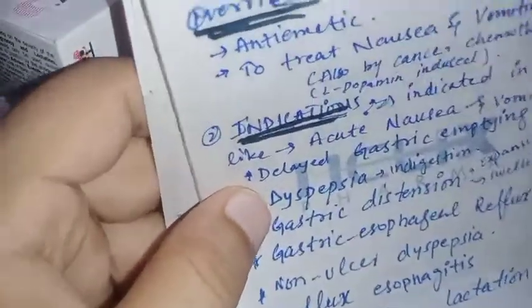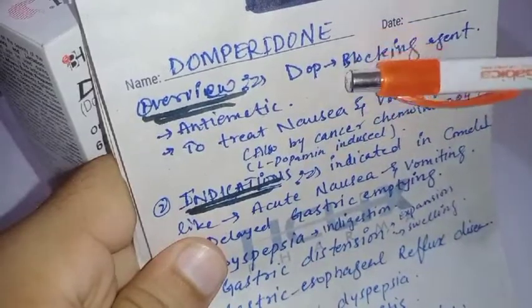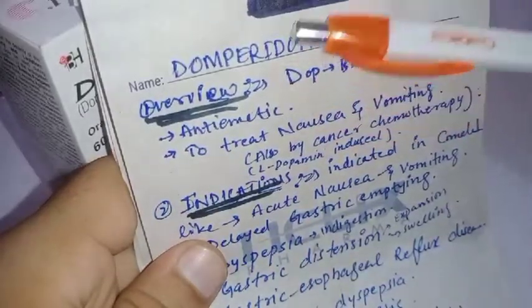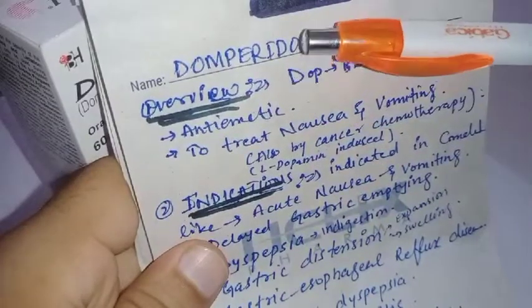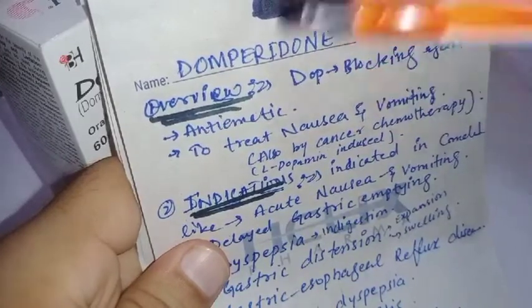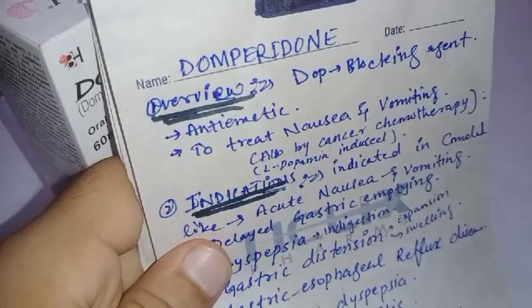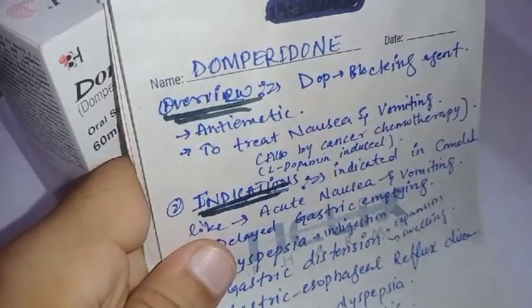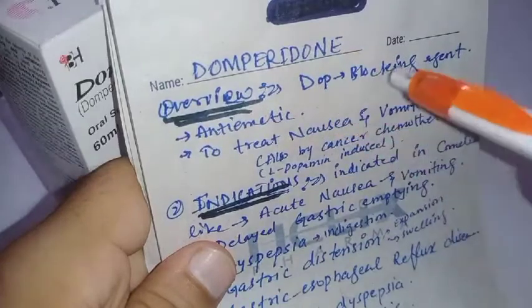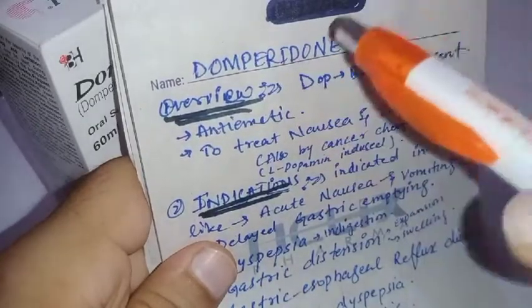Let's talk about its overview. Domperidone is a dopamine blocking agent. When there is an extra or high level of dopamine in our body or brain, it can trigger the chemoreceptor trigger zone, which can activate or stimulate the vomiting center and lead to vomiting. Domperidone has anti-emetic effects, so we can give it for vomiting.